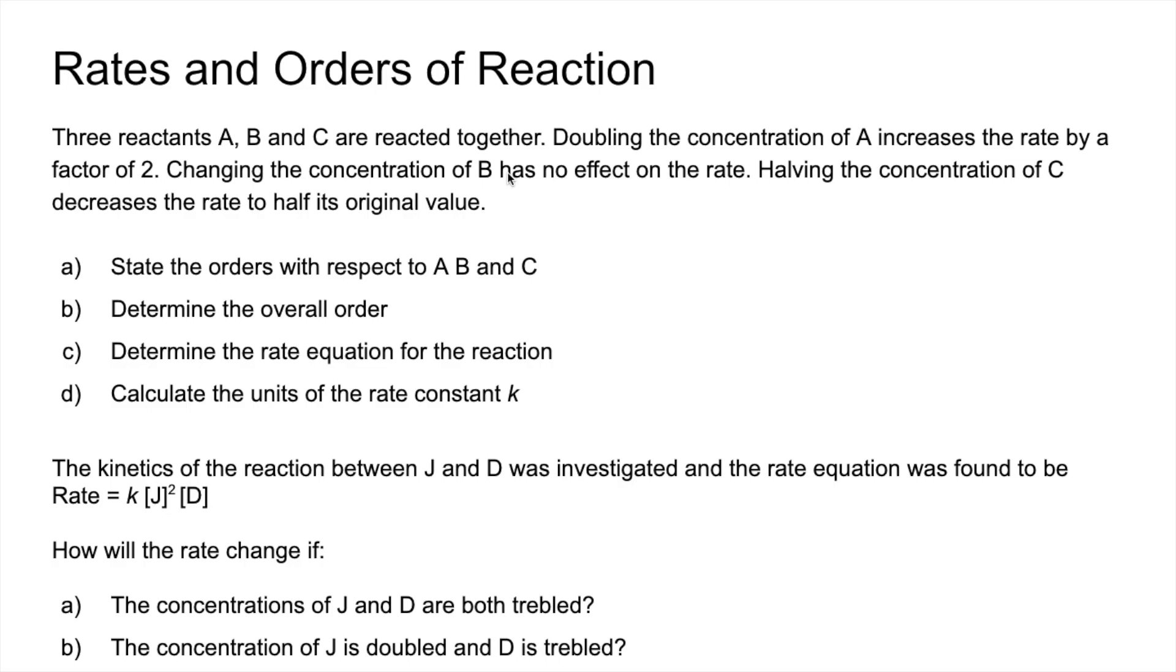B has no effect on the rate, so zero order for B. Halving the concentration of C decreases the rate to half its original value, so that's doing the same thing, just like A did. So that's first order as well. So A first order, B zero order, C first order.